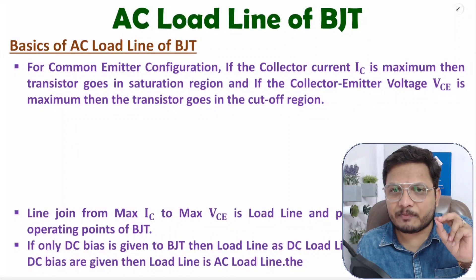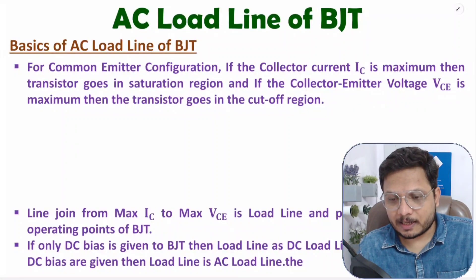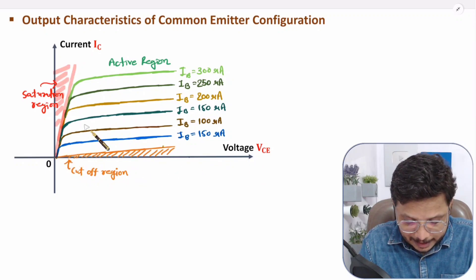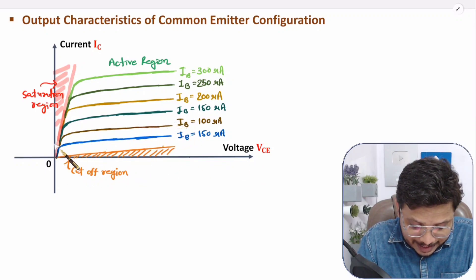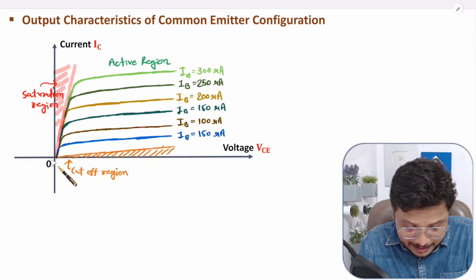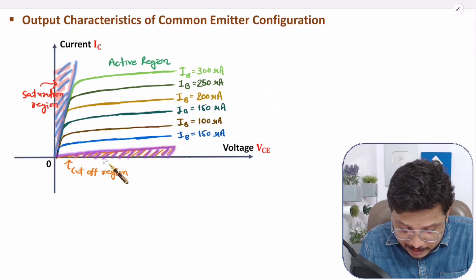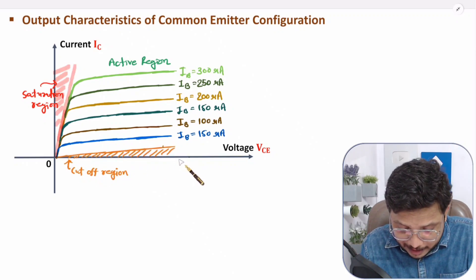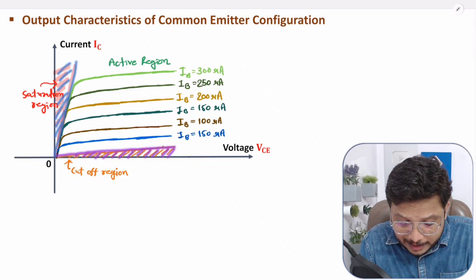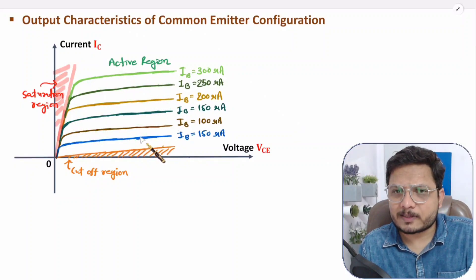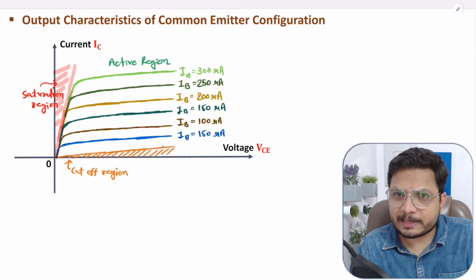With common emitter configuration, we have already seen output characteristics. That characteristic shows: in the saturation region, IC current goes high and VCE voltage stays low. In the cutoff region, VCE voltage goes high and IC current stays low. In the active region, IC current stays constant. That is the basic characteristic we have already seen in earlier videos.